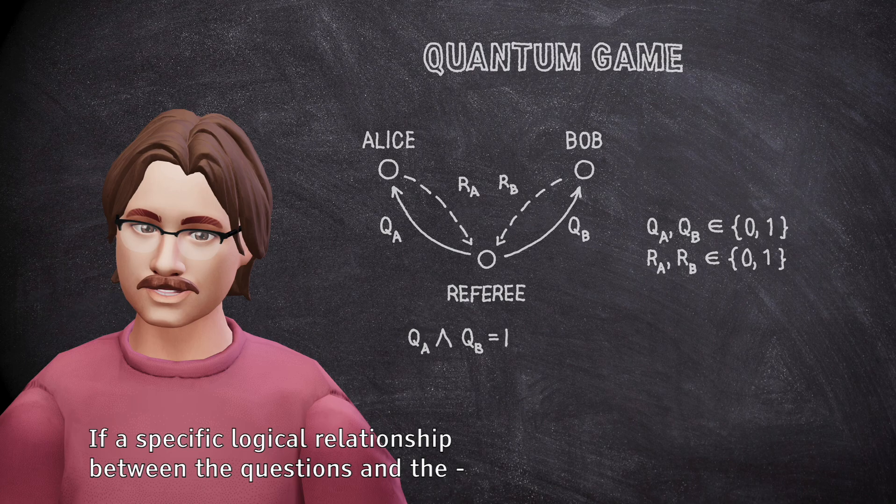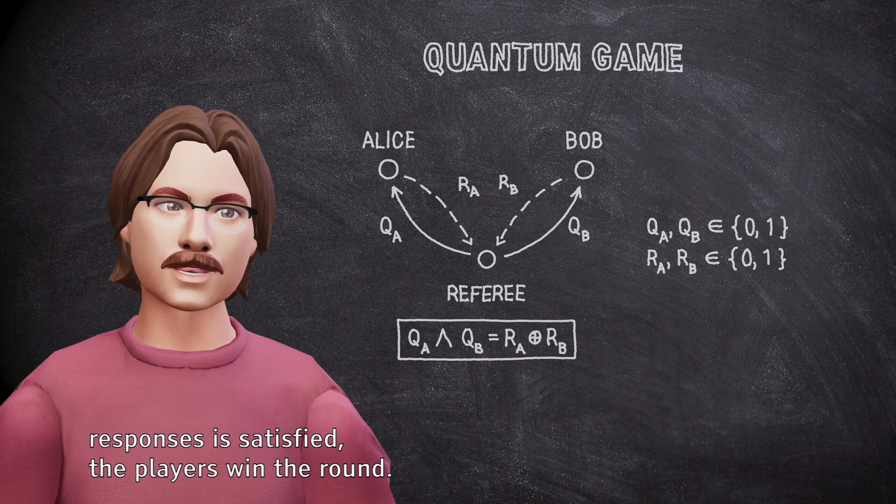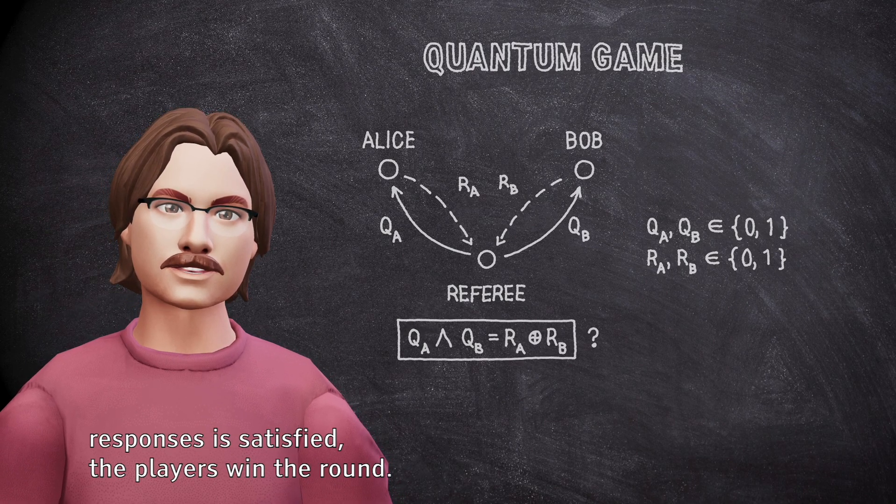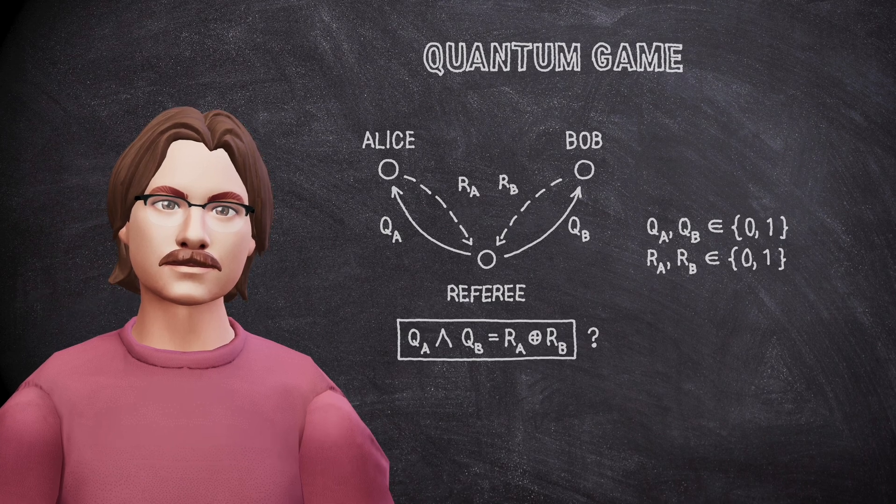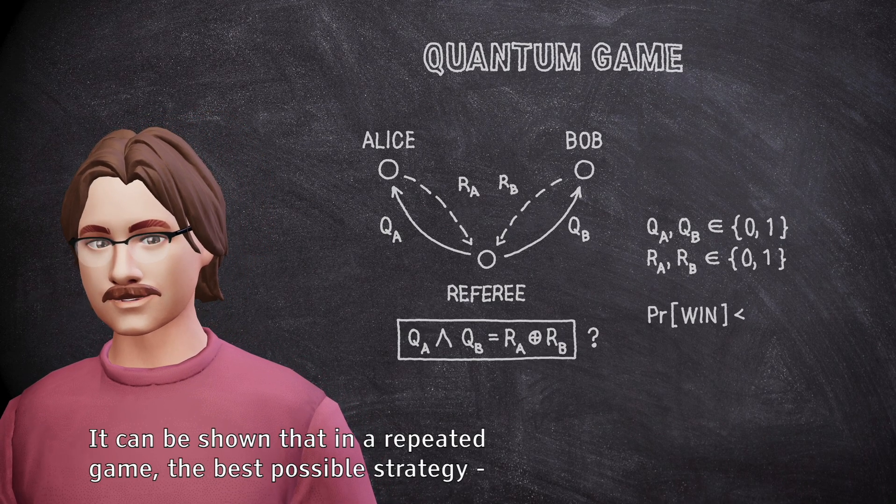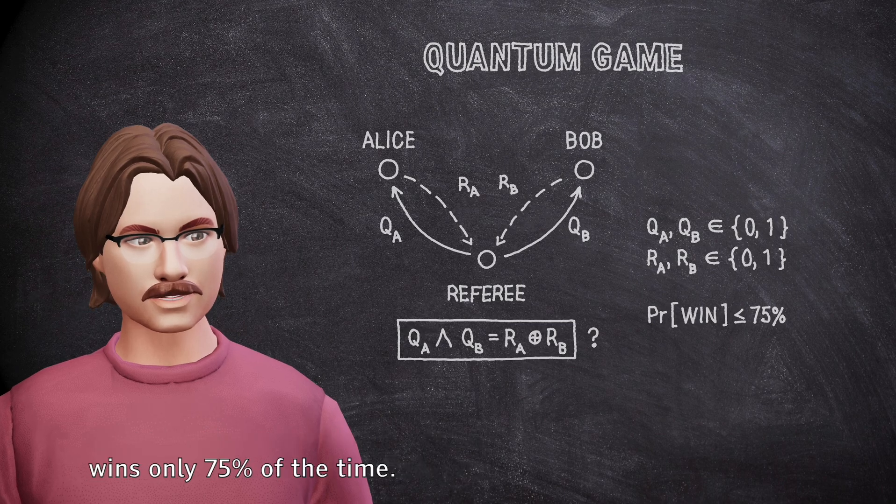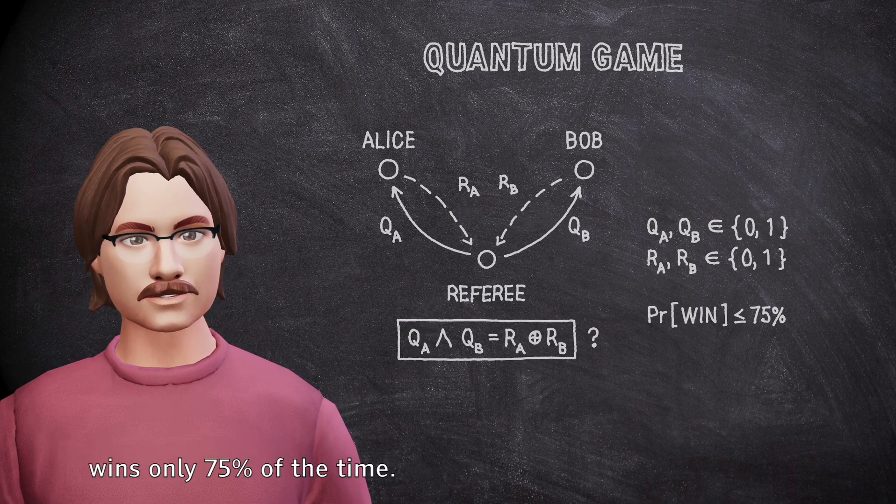If a specific logical relationship between the questions and the responses is satisfied, the players win the round. It can be shown that in a repeated game, the best possible strategy wins only 75% of the time.